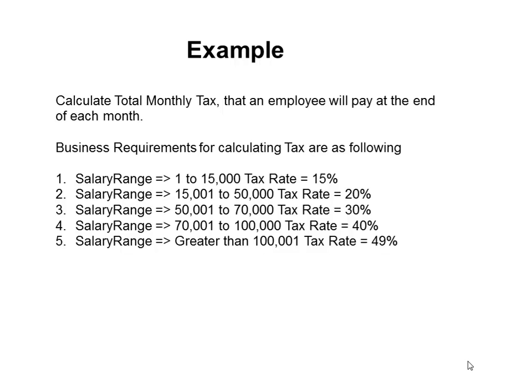In order to understand this concept better, let's take an example. We will be calculating the monthly tax that an employee will pay at the end of each month. According to the business rule, the tax will be calculated based on the annual salary. If the annual salary is between one dollar and fifteen thousand, then the tax rate will be fifteen percent, and so on. For test case one, we will have to cover the boundary condition — that is, one dollar and fifteen thousand — and we have to cover an in-between value, so there will be three test cases for that range. The last tax bracket will have two test cases. Altogether we will have fourteen test cases.